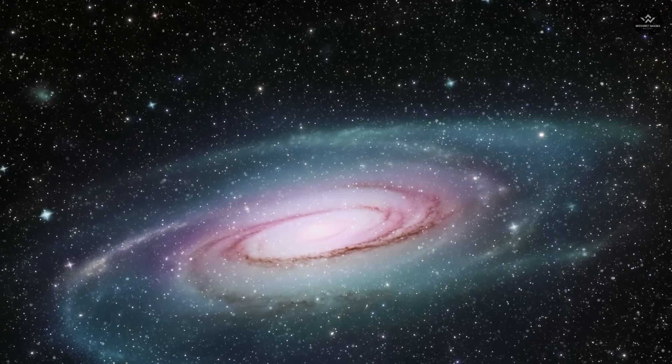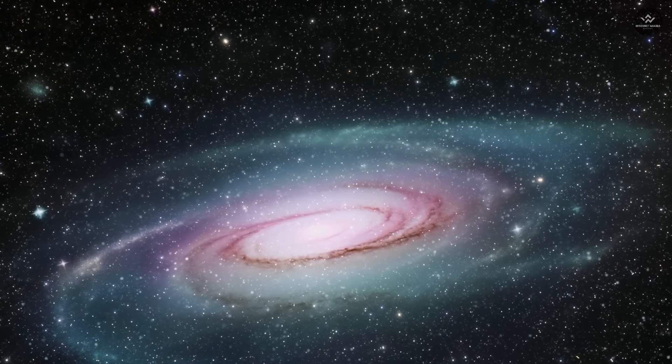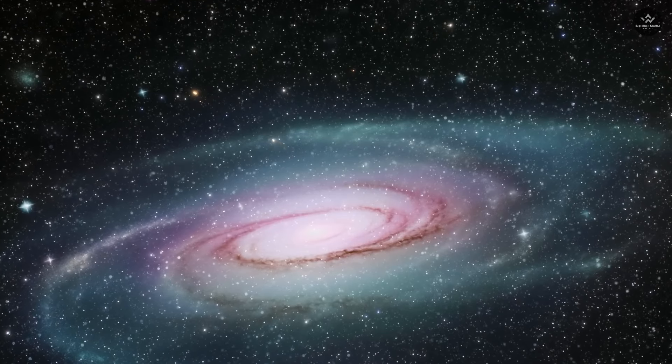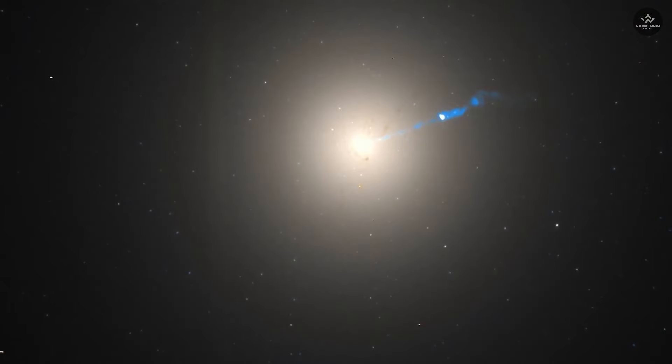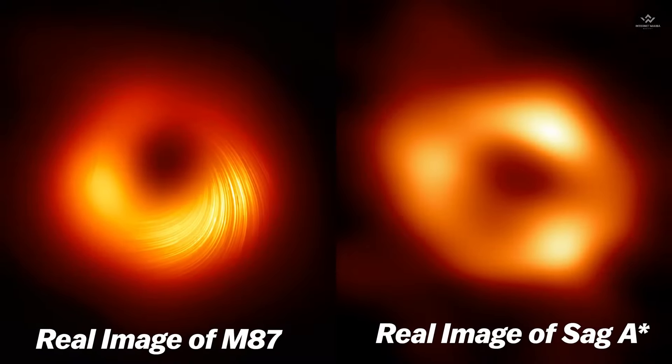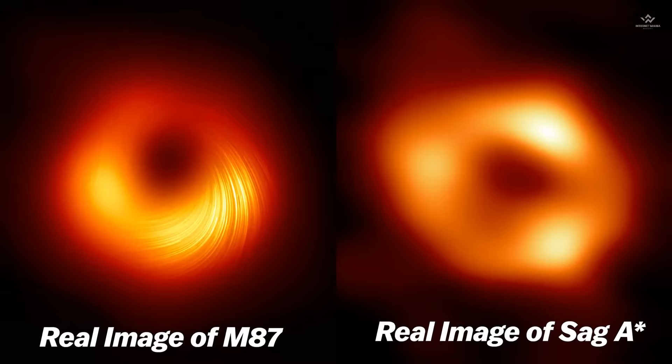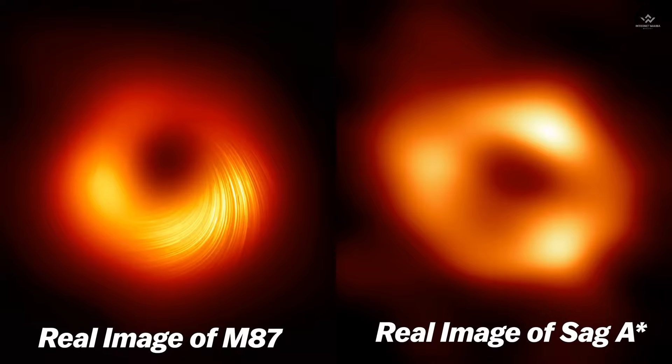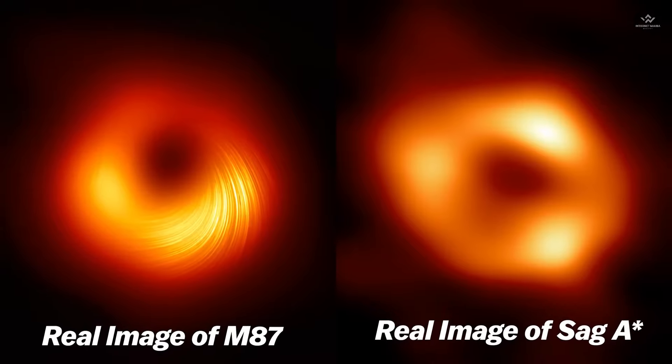Sagittarius A* is the black hole at the center of the Milky Way galaxy, located 26,000 light years away from us. The M87 black hole is 53 million light years away. These pictures show not the black hole itself, but the surrounding matter and light being affected by it.